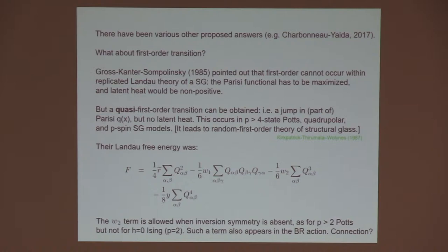In Gross-Kanter-Sompolinsky, they worked with a free energy function in Landau theory of this form, going up to fourth order with one term that they kept. The key thing is this W2 term, which is not allowed if you have inversion symmetry, but is allowed in these models such as POTS and quadrupolar spin glasses. It's not allowed in an Ising spin glass at zero magnetic field. On the other hand, it also occurs in the Bray-Roberts action, so maybe we should think a bit more about whether there's a relation between these things.